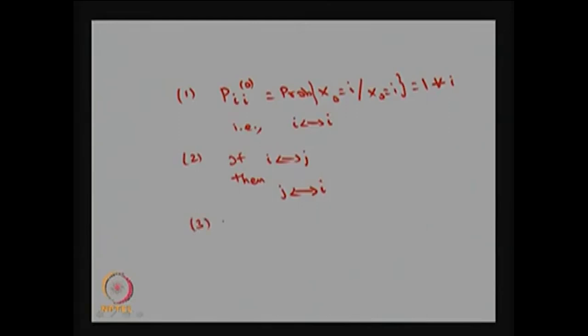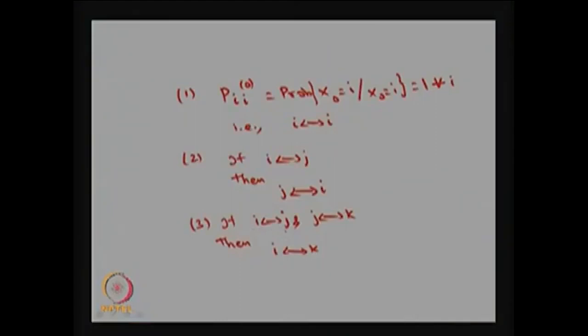The third property: if i communicates with j and j communicates with k, then we can conclude that i communicates with k. This relation is called transitive. So communicate satisfies the reflexive, symmetric, and transitive properties. Communication is an equivalence relation on the set of states, and hence this relation partitions the set of states into communicating classes. One can easily prove these three properties using the one-step transition probability, the n-step transition probability matrix, and the accessible concept.